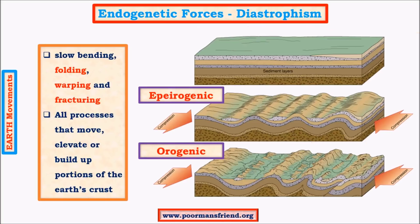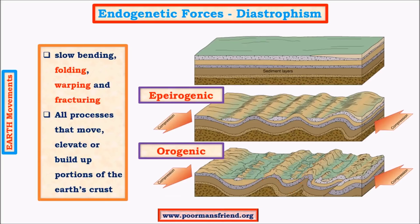Orogenic movements take place within a small width but may extend for thousands of kilometers in length. They mainly form due to compressive forces. Convection currents within the earth's mantle drive the movement of lithospheric plates; when currents move in opposite directions, there is compression on the two ends of a block of earth, causing folding of the region in between.